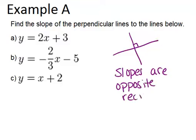So in this question where it says find the slope of the perpendicular lines to the lines below, that means we should look at each of the slopes given, which are just the coefficients of x, and find the opposite reciprocal to those values.